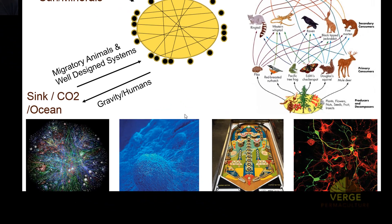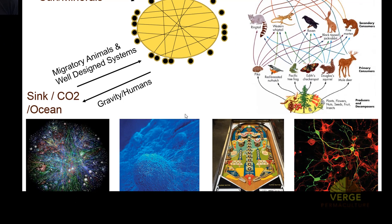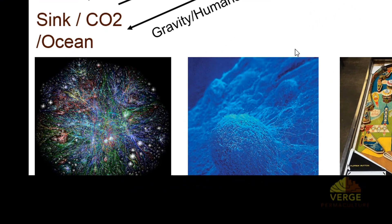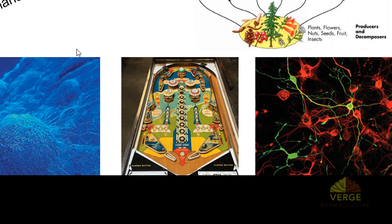Some of the most successful organisms and systems on the planet are web-based: the internet, mycelium — which can increase the surface area of a tree by up to 800 times — and the human brain, which is also a network. The human brain takes about the same energy as a 90-watt incandescent light bulb, yet has the ability to design energy out of the system. It's entirely based in networks and webs.